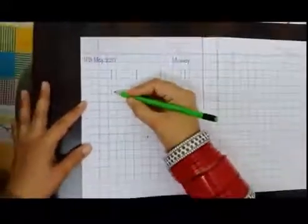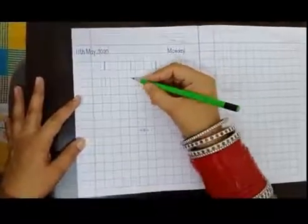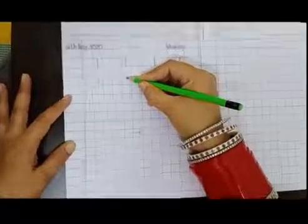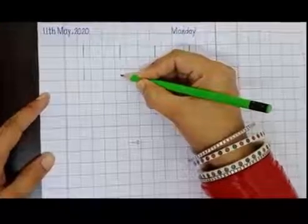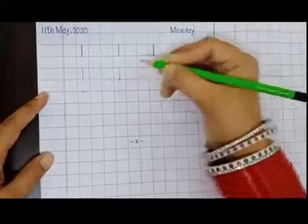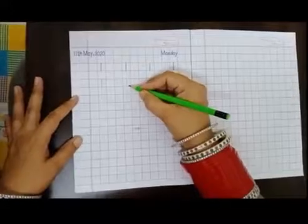This is number one. Now, again, keep your pencil on the dot. Come down, down, slowly, slowly and touch the bottom line. This is number one.